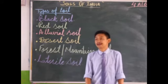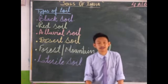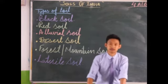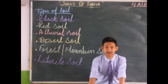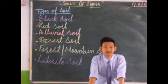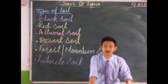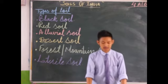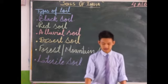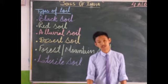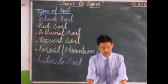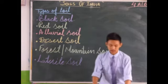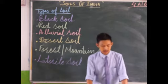There are canals which we have already discussed in the chapter on deserts of India. With the help of canals, irrigation is possible in desert areas. Without canals, irrigation would not be possible. Next is forest or mountain soil.